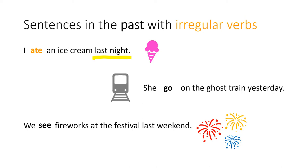The next sentence says, "She go on the ghost train yesterday." Well, if we are talking about yesterday, we can't say go. We have to say went in the past.